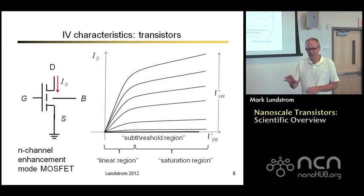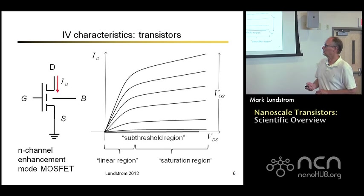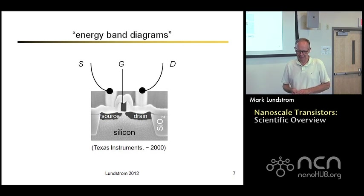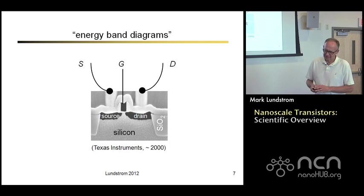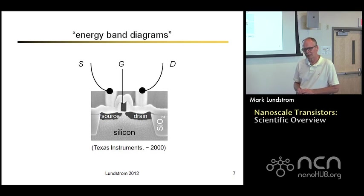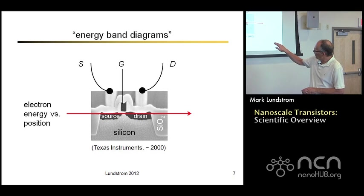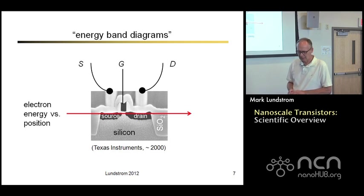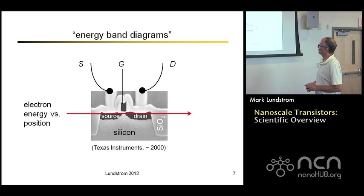One of our goals in this course is going to be to understand the internal physics of how electrons and holes flow and what leads to these kinds of IV characteristics. How do we design transistors such that they have suitable IV characteristics for electronic systems? A key tool for doing that will be drawing energy band diagrams. We can plot the electron energy versus position from the source across the channel and out the drain, and if we do that we can very easily see how this device operates.